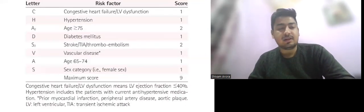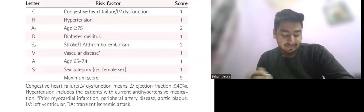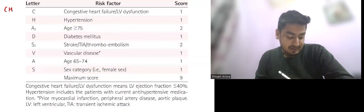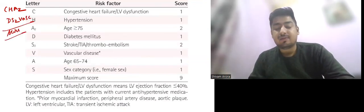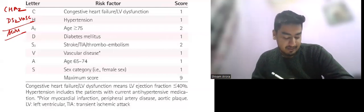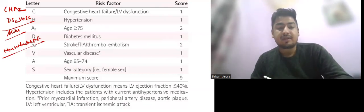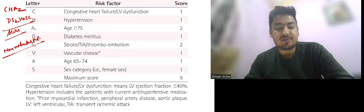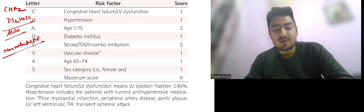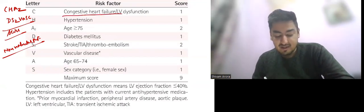Now let us discuss this very important table. This is the CHA2DS2-VASc score. When we calculate this CHA2DS2-VASc score in patients with non-valvular AF, we assess the risk of stroke in this patient and decide when to start anticoagulation or not.